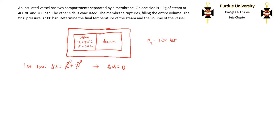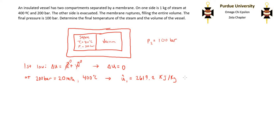Since we know both the temperature and pressure of the initial steam, we can use the steam tables to find the internal energy associated with that state. Going to the steam tables under the superheated water vapor section on page 657, at 200 bar — which is also 20 megapascals — and 400 degrees Celsius, the internal energy is 2,619.2 kilojoules per kilogram. Since there is no change in internal energy throughout this process, the internal energy of the final state, U₂, is also going to be the same.